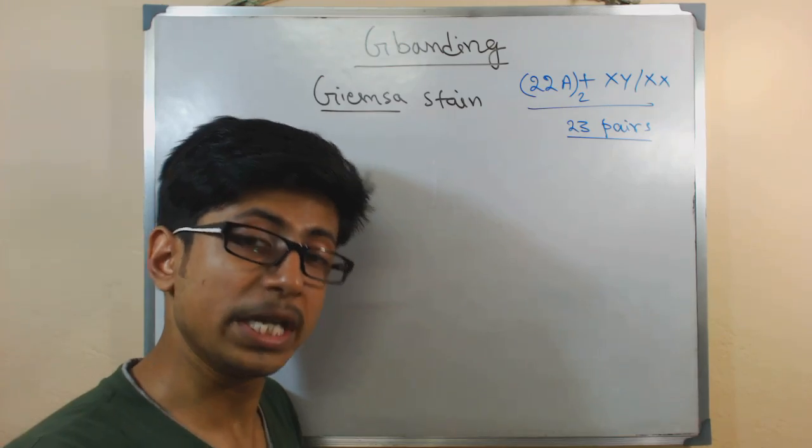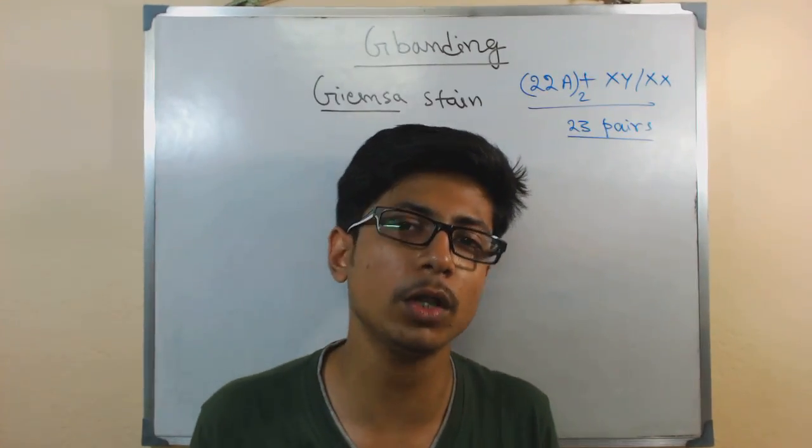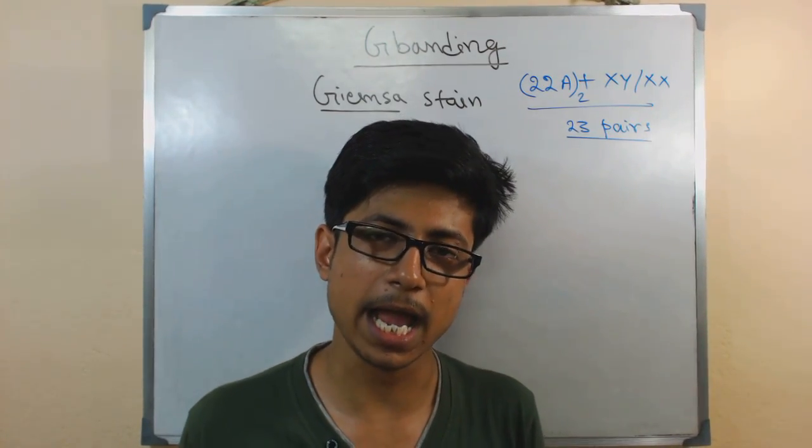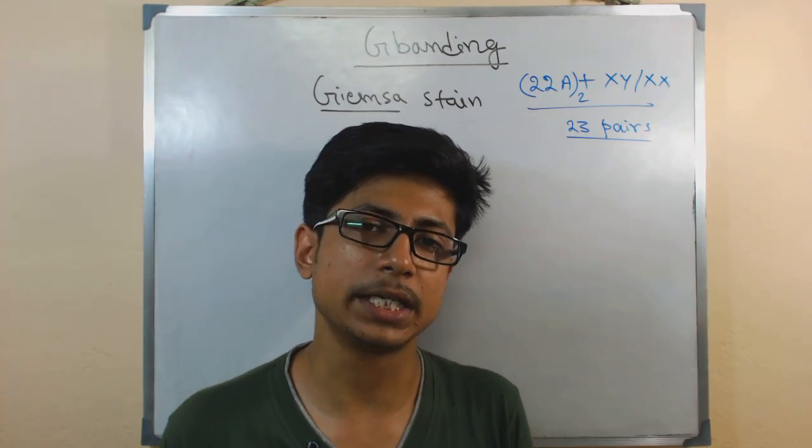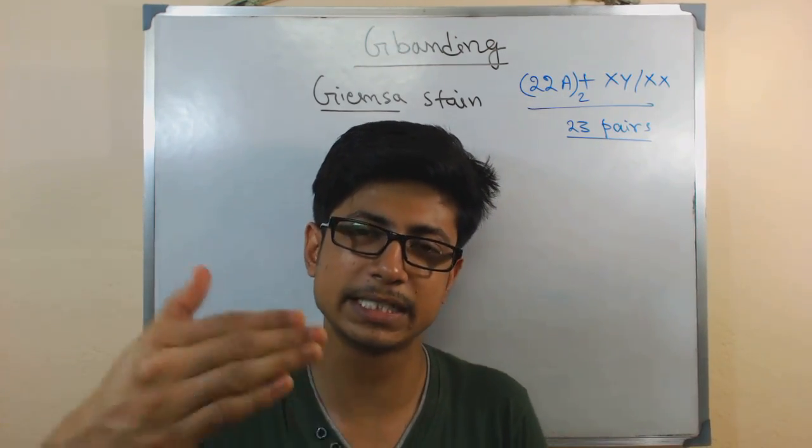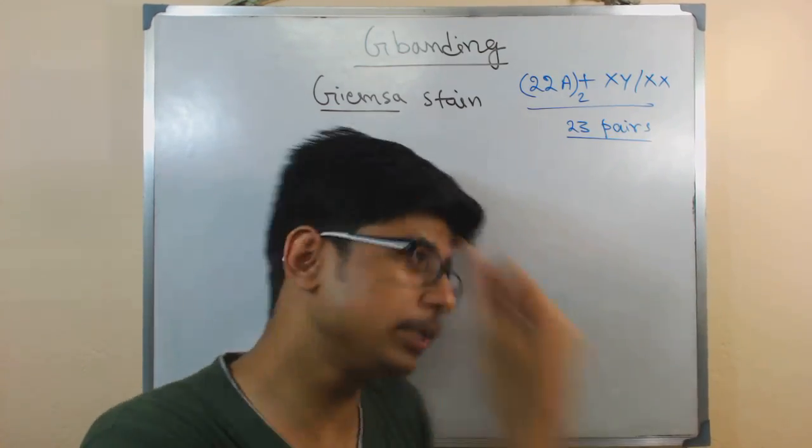We can see chromosomes using a microscope during metaphase. Remember, we cannot see chromosomes directly in all the different cell division phases. We can only see them during metaphase and also right after the interphase position when they start to become much more condensed.